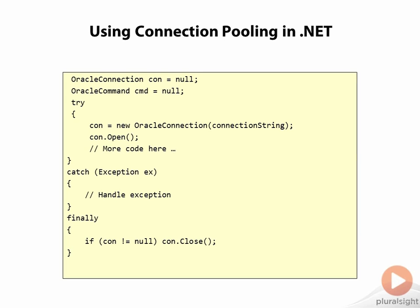I have a segment of some data access code, and all this code is doing is opening a connection to the database, performing some data access work, and then closing the connection. When the program executes this line right here, even though the name of this method is open, what is really happening is that you're borrowing a connection from the connection pool. It may be that the connection pool does indeed have to open a new physical connection to the database, but most times this line is just going to grab an available connection from the connection pool and hand it back to your code.